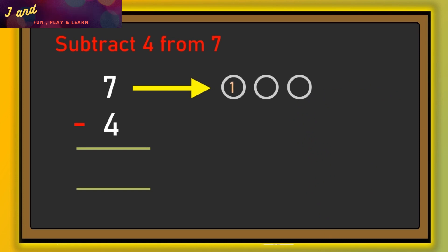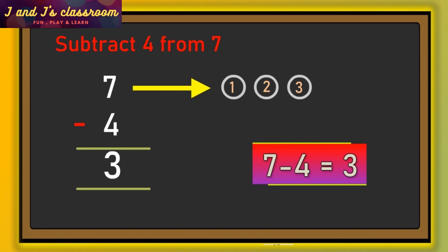Now count the remaining circles: one, two, three. Yes, of course, three is the answer. Now write it down. So when we subtract four from seven, we get the answer three. That is the difference between seven and four.